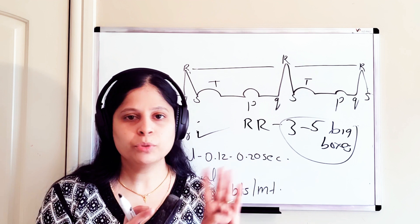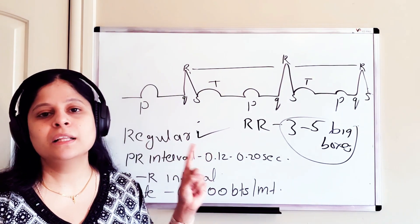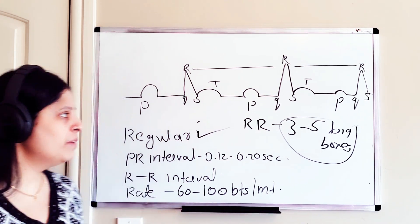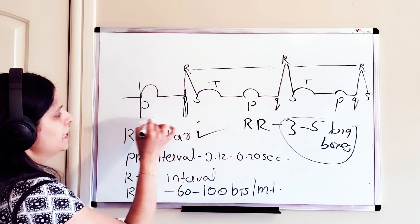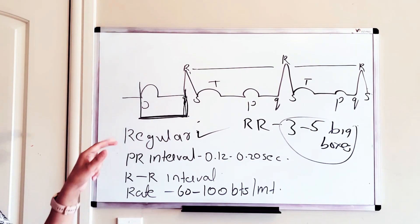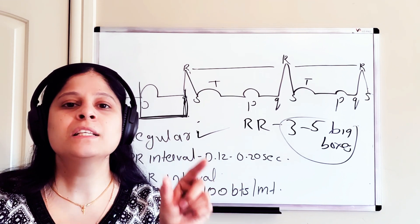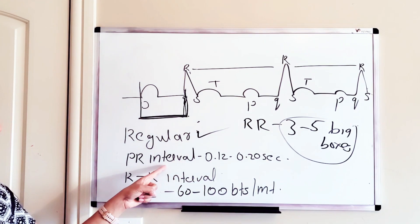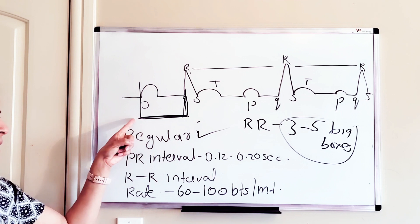Two consecutive RR intervals should be the same as the next two RR intervals — that's how you confirm a regular rhythm. The next criterion is PR interval. The PR interval is the distance from the beginning of the P wave to the beginning of the QRS complex. On a normal ECG rhythm, this should be within one big box. The normal PR interval is 0.12 to 0.20 seconds, which corresponds to within one big box.